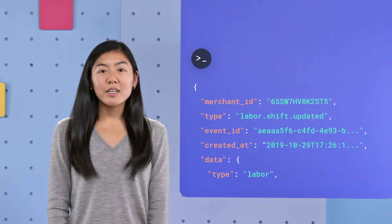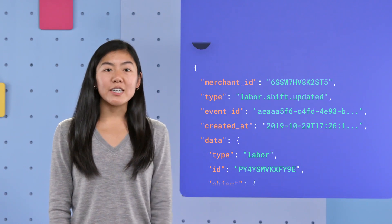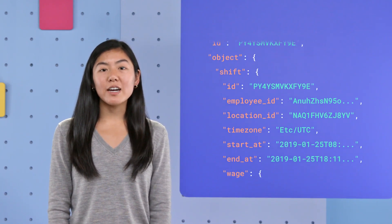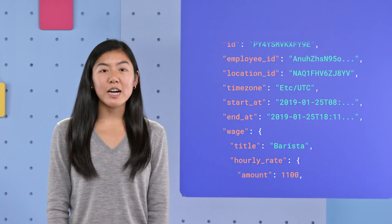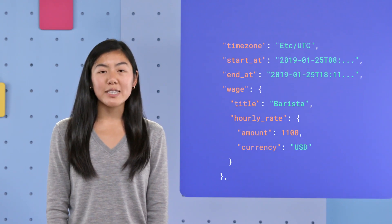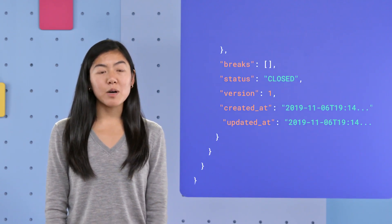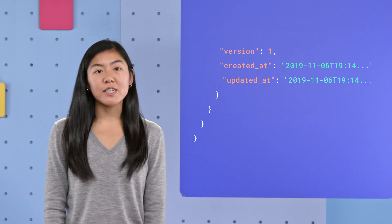For example, we send out webhooks whenever a seller's employees create, update, or delete a shift. Let's take a look at a sample webhook you might receive. The merchant ID you see here is the seller account where this event occurred, and you can see from the type that an employee has updated their shift. Note that the data object of the webhook is the shift itself, containing its updated information.